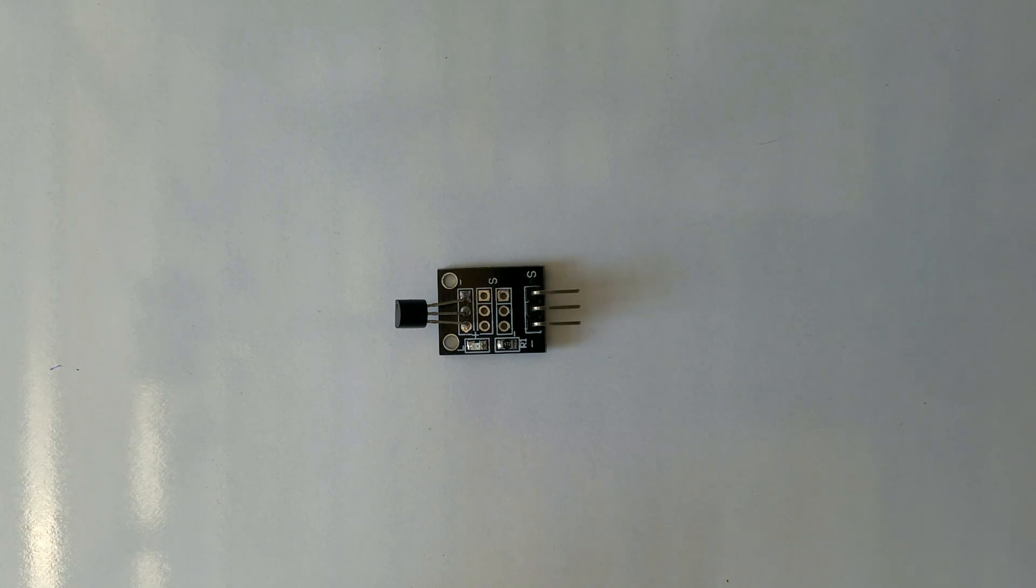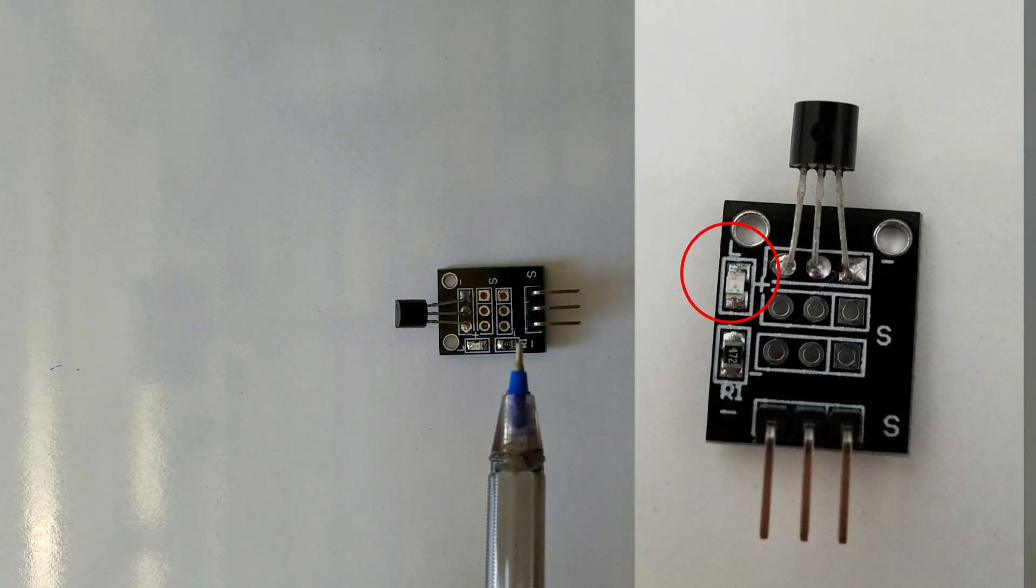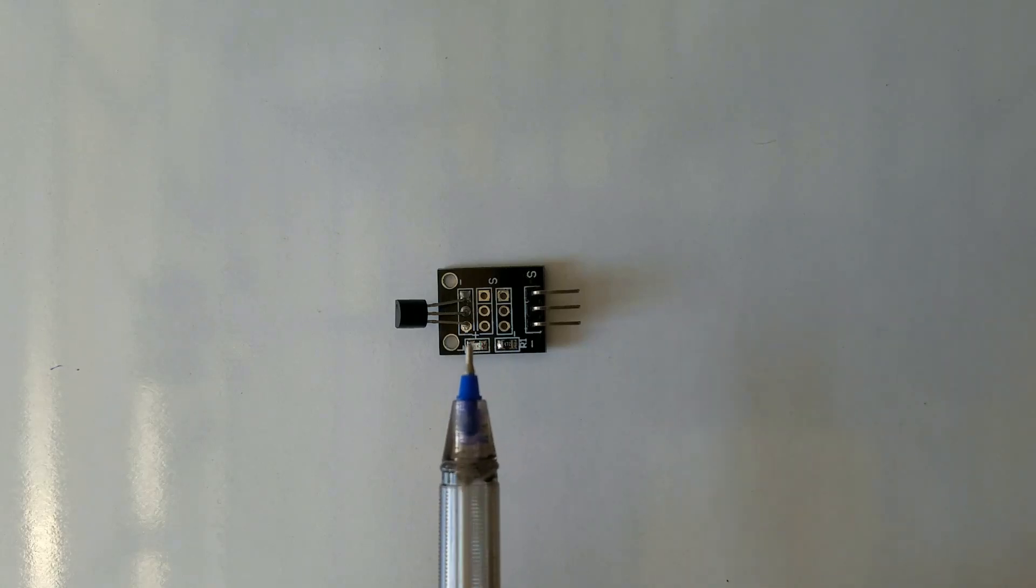This module has integrated on board a temperature sensor called Dallas 18B20 with single bus technology, a resistor and a LED. The resistor used in this module is 4.7kΩ and the main reason for using the resistor is to limit current circulating inside the module, in other words to prevent the current from burning our module. The LED lights up to show if the module is working properly or not.